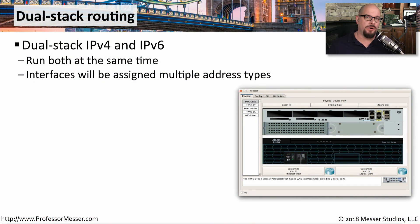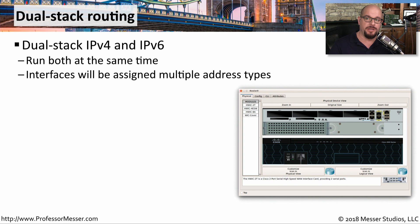We've been using IPv4 on our networks for a very long time, and now many network administrators are faced with also including IPv6 on their networks as well. One of the easiest ways to include both IPv4 and IPv6 on a network is to configure a dual-stack configuration. This means on a particular workstation, router, or other Layer 3 device, you would be able to configure both an IPv4 address and an IPv6 address simultaneously.